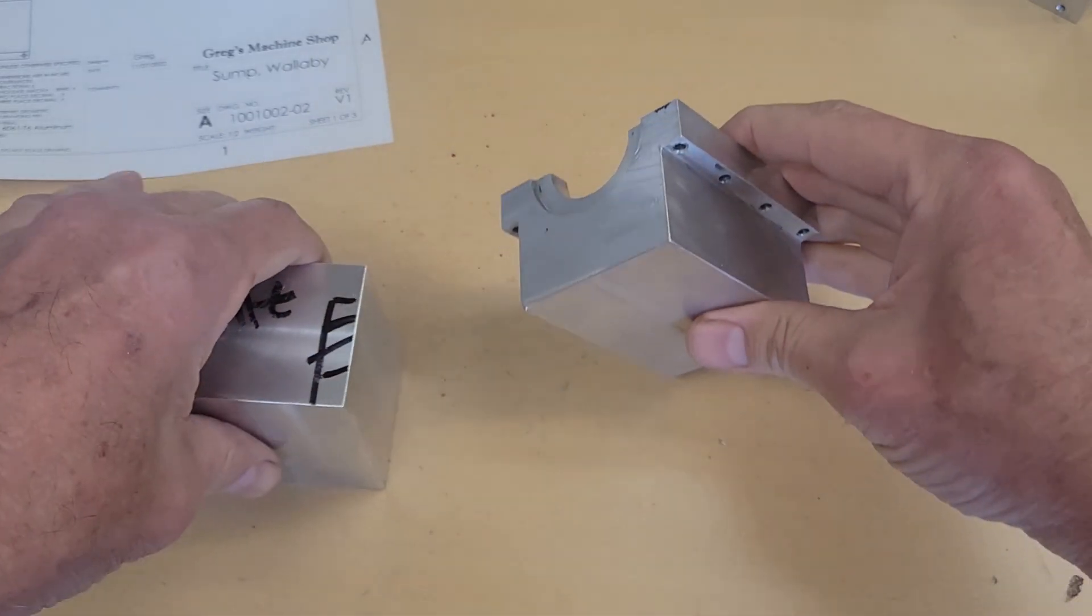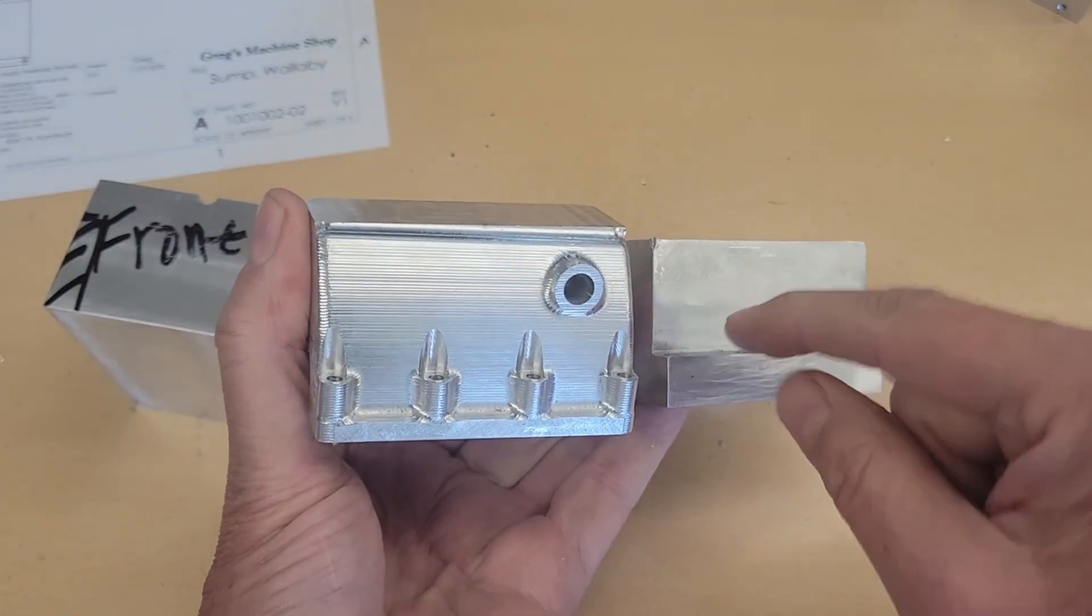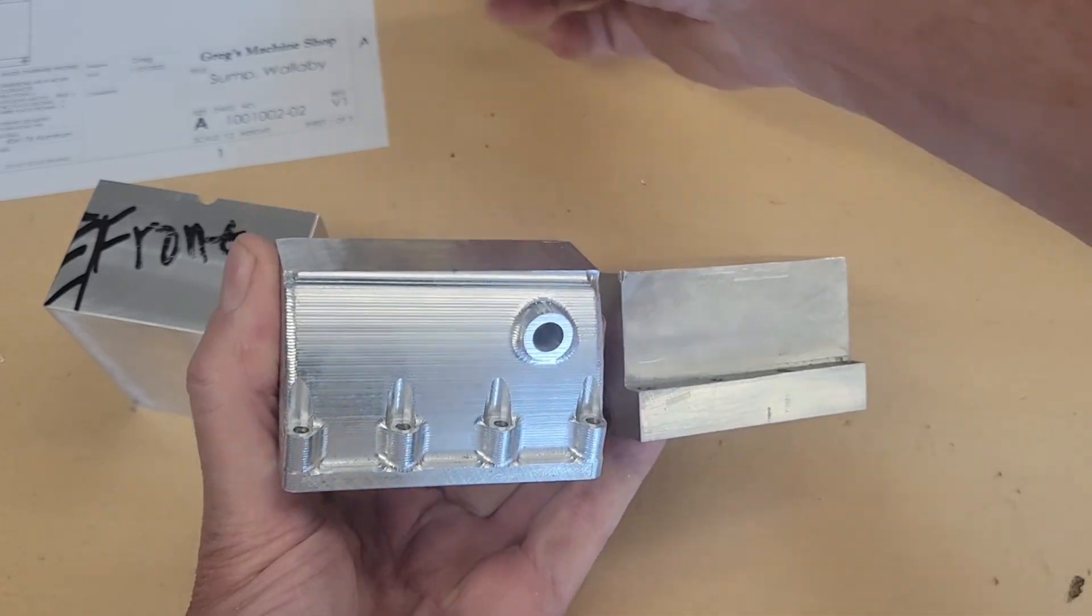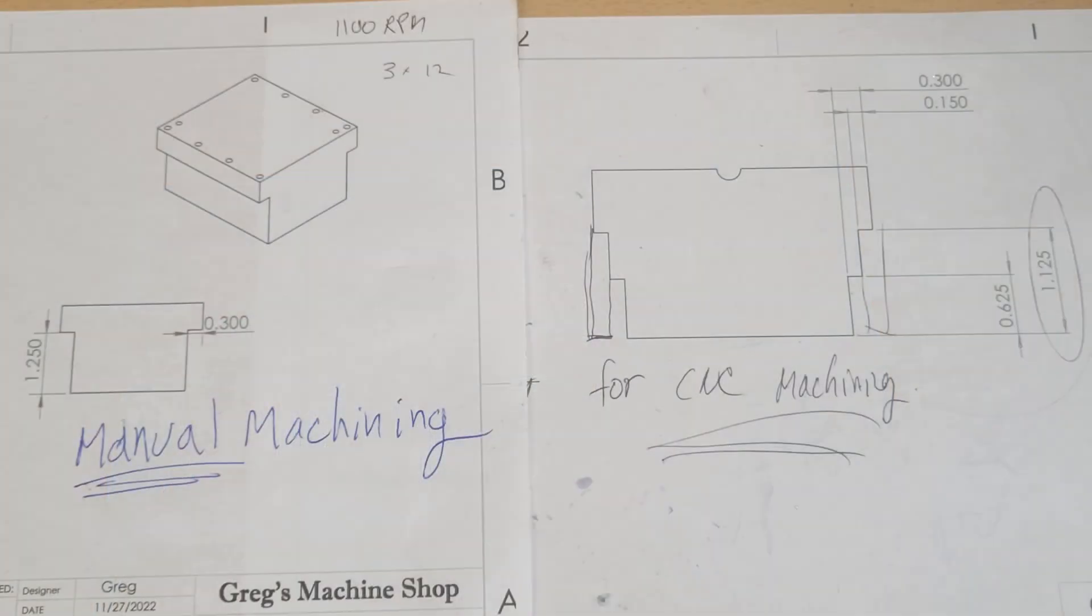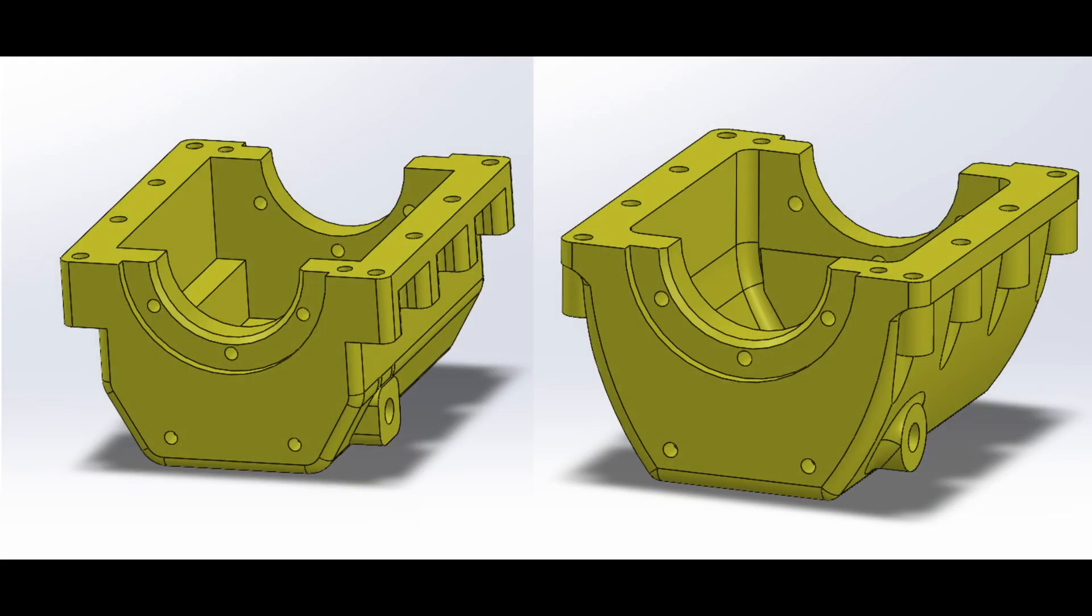At this juncture we need to make a decision because the machining is different for the manual machine sump than it is for the CNC machine sump. The two sumps are functionally identical. It's just that the one on the left is easier to manual machine.